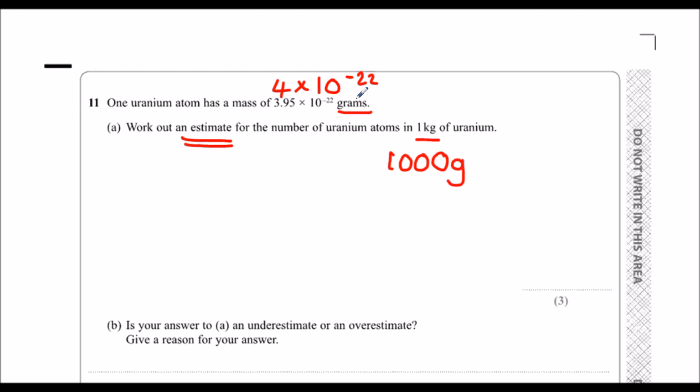So how many of these fit into this? I need to divide them. So it's 1000 divided by 4 times 10 to the power of minus 22. See how many fit in: if they were 100 each, there would be 10 fit in. 1000 divided by 100 is 10. It doesn't matter that it's a standard form number, the operation is the same.